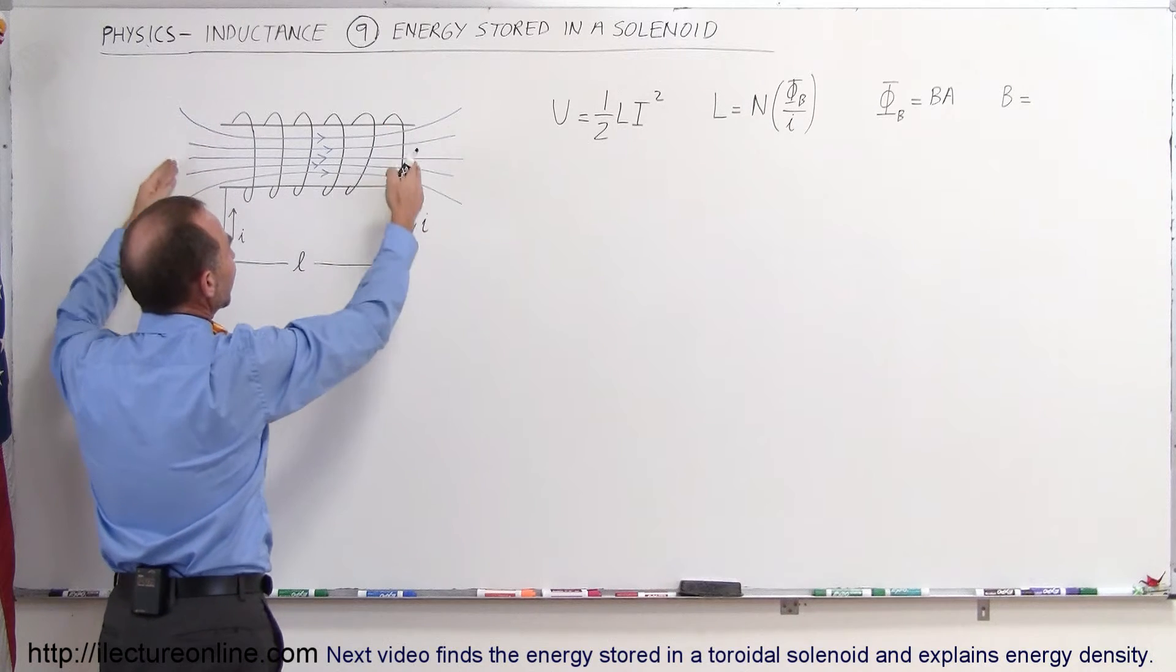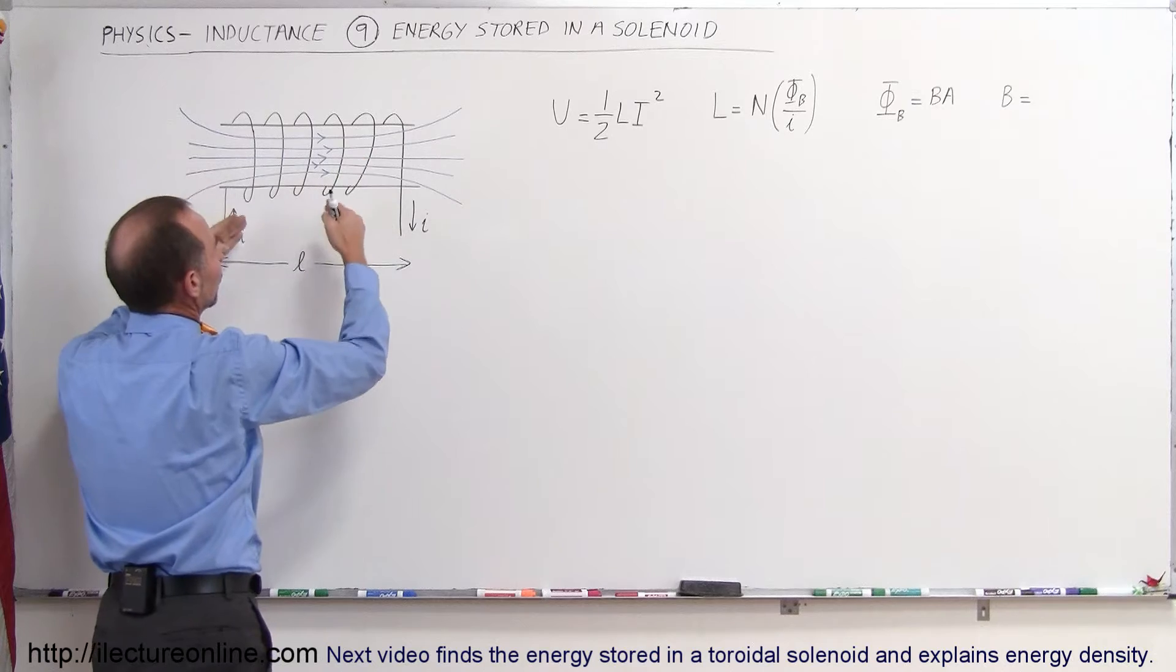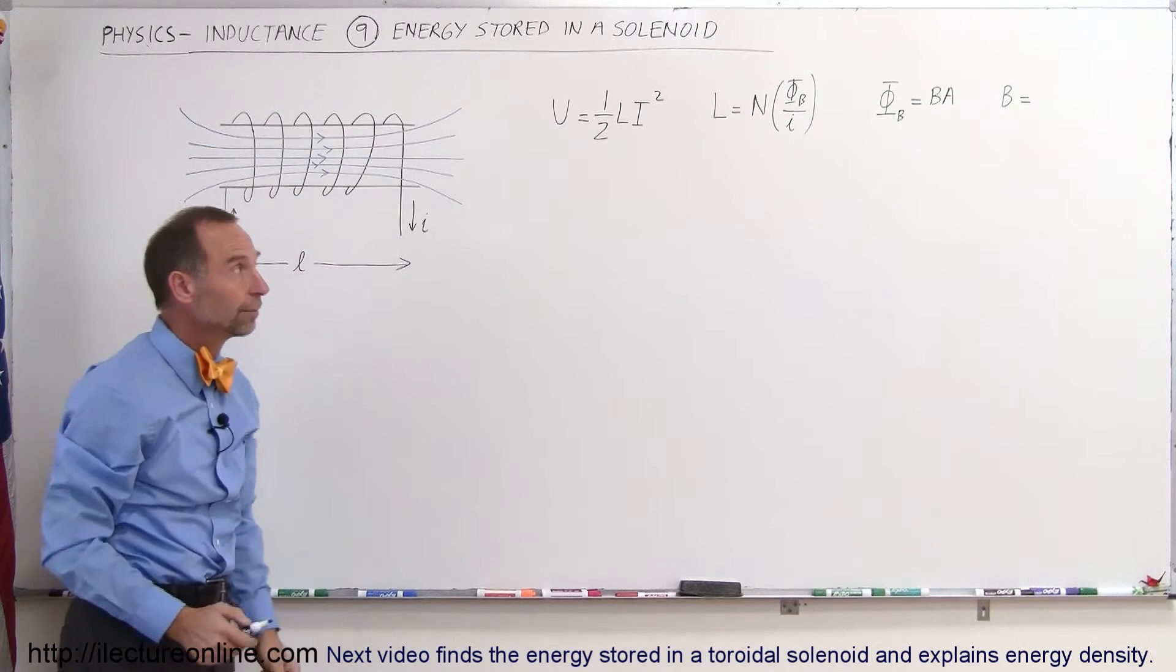And finally, the magnetic field of the solenoid is equal to mu sub-naught times the number of loops per unit length times the current to the solenoid.